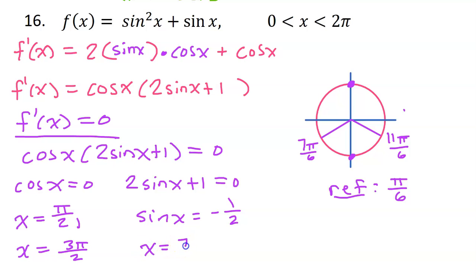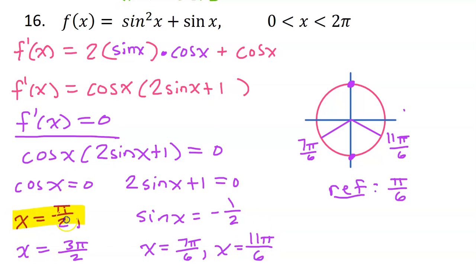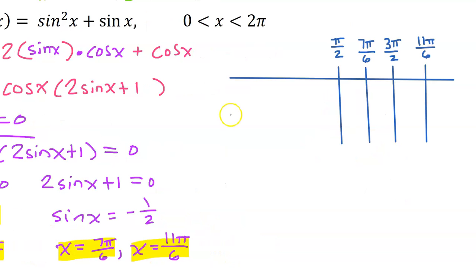So our solutions are x equals 7 pi over 6 and x equals 11 pi over 6. We now have four critical numbers in order on the number line, all ready to make the sign chart.